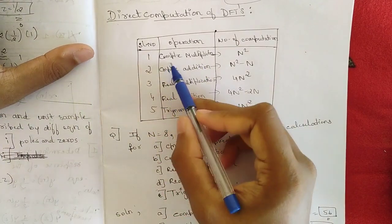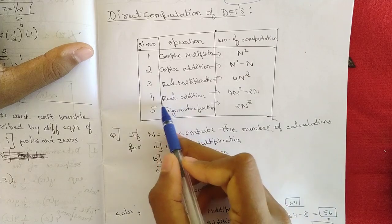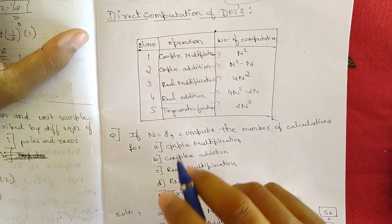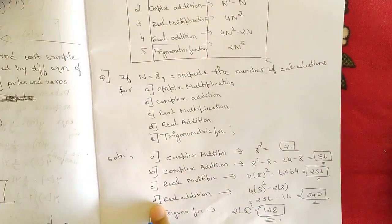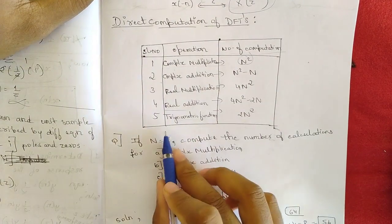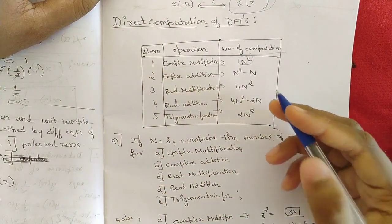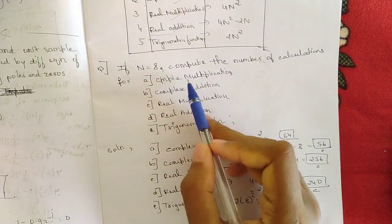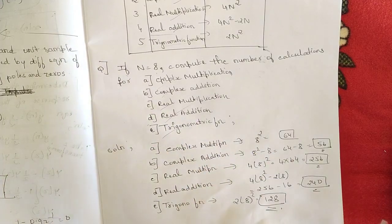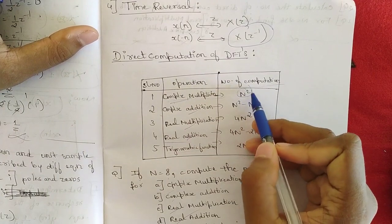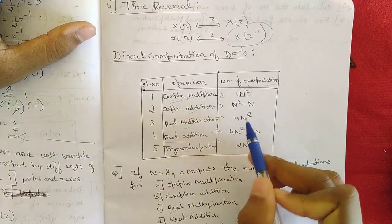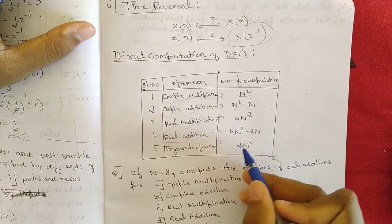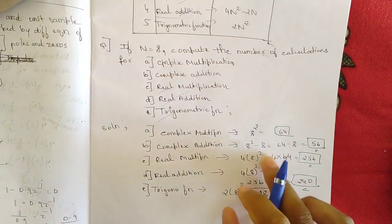Direct computation of DFTs involves finding the number of calculations for: complex multiplication, complex addition, real multiplication, real addition, and trigonometric functions. The formulas are: complex multiplication = N², complex addition = N² − N, real multiplication = 4N², real addition = 4N² − 2N, and trigonometric functions = 2N². This table you should remember — it's very important. For a given N, directly substitute and write the number of computations.